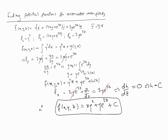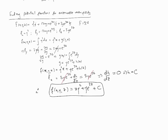We can verify this by computing grad f: the x derivative gives y squared, the y derivative gives 2xy plus e to the 3z, and the z derivative gives 3y·e to the 3z. Comparing with the original vector field — y squared i, 2xy plus e to the 3z, and 3y·e to the 3z — it matches exactly. That's how we find potential functions.